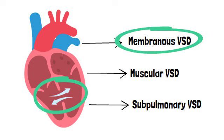In membranous VSD, the defect is in the upper section of the ventricular septum.